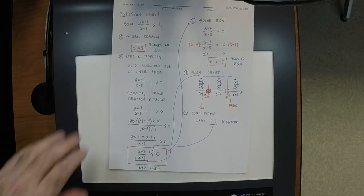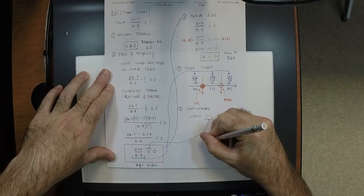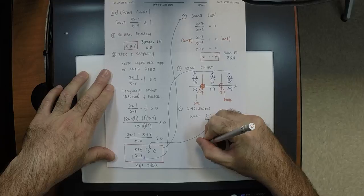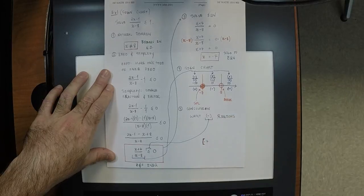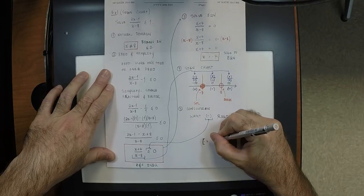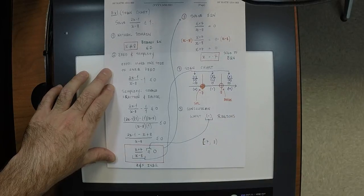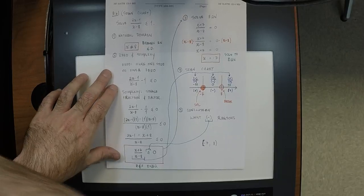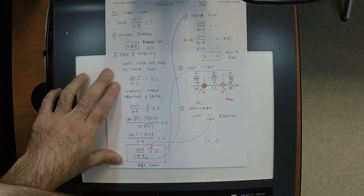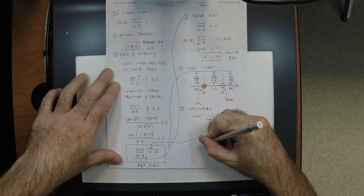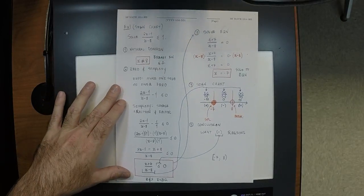If I were to go back and change this to greater than or equal instead of less than or equal, then we'd want the positive regions instead. So why use a bracket on negative 7? Because it's included — it's a solution. And why use a parenthesis on 8? Because it couldn't possibly be part of the solution — it was never in the domain of consideration in the first place.